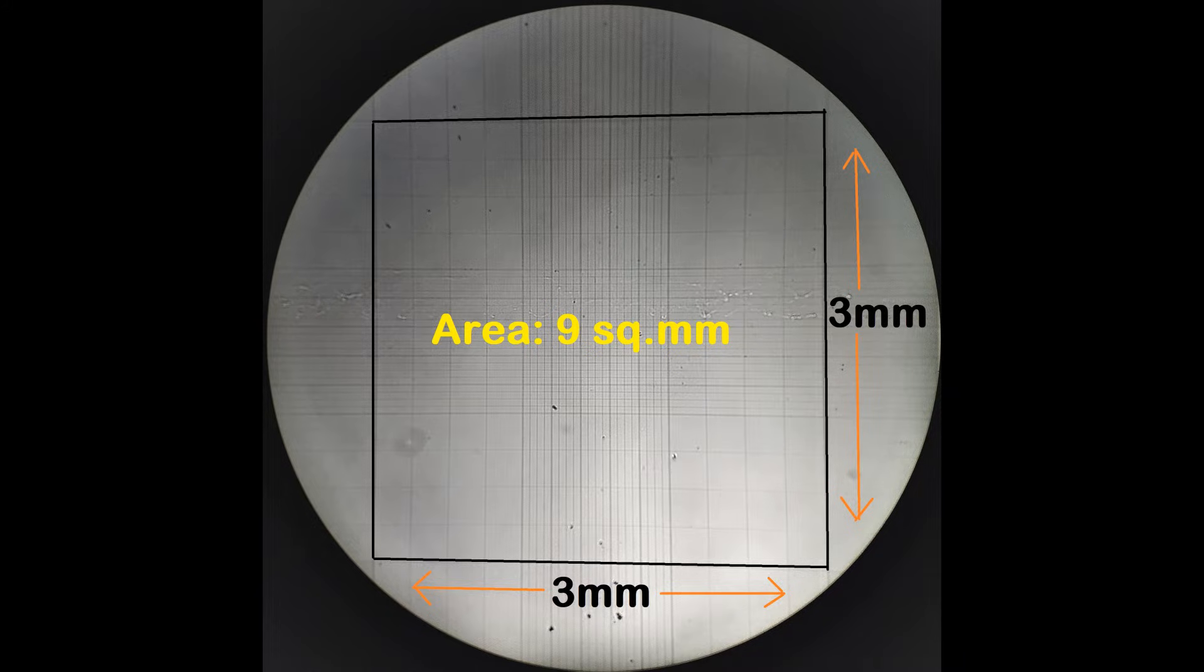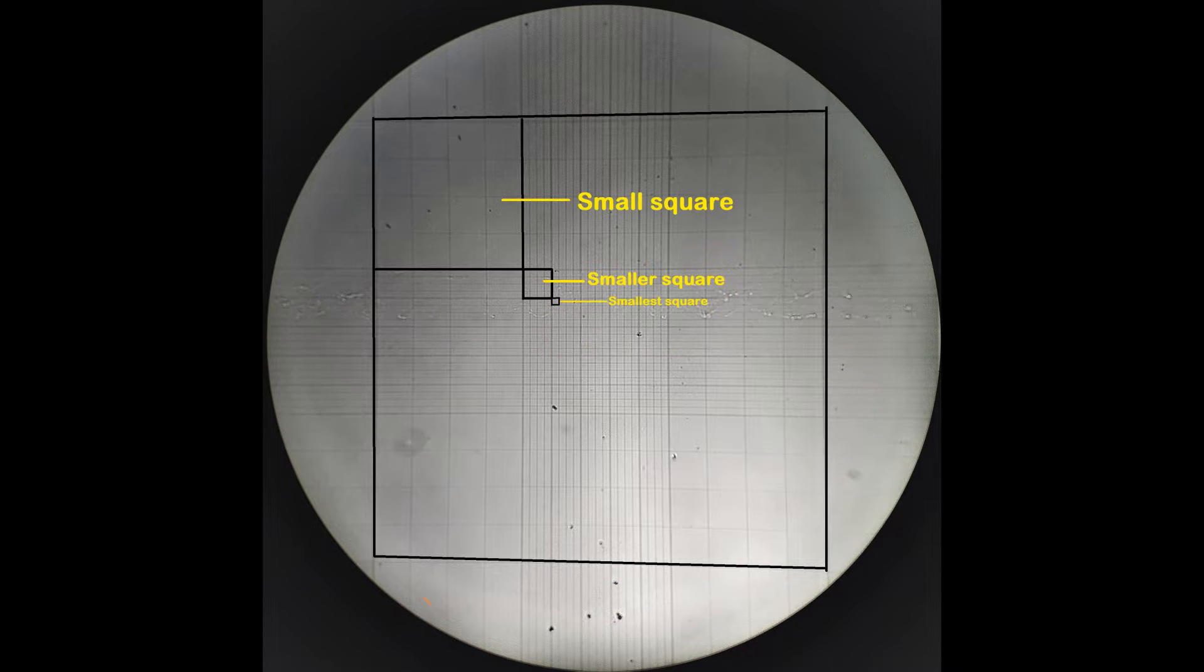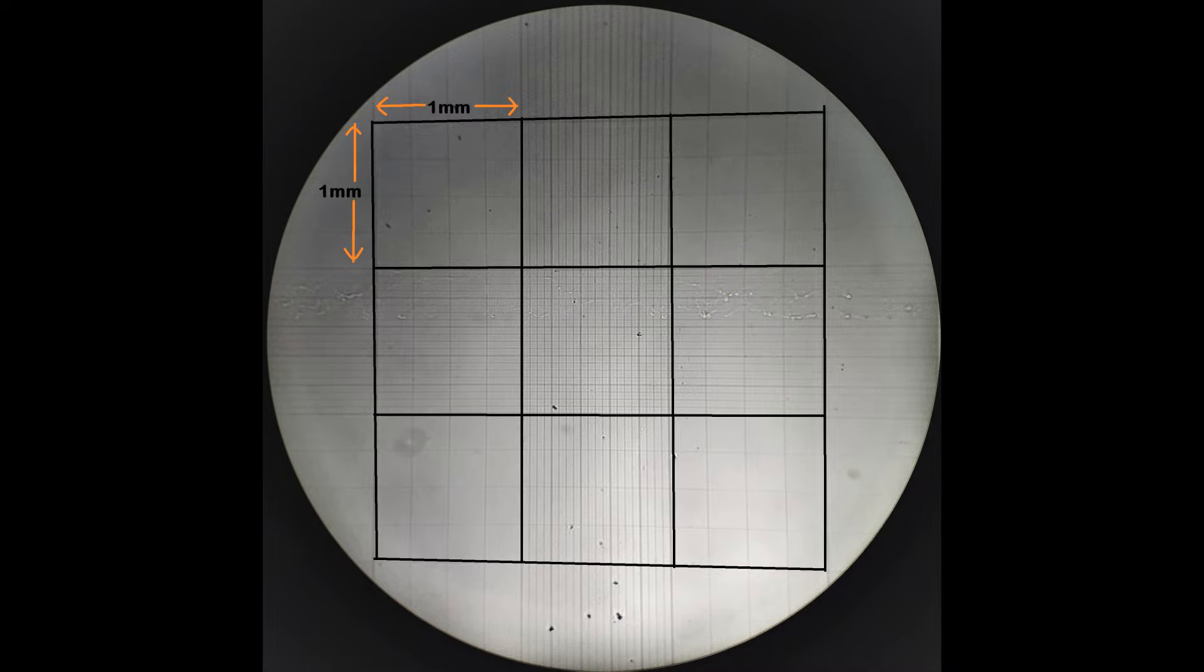Within this counting grid can be found squares of three different sizes, simply referred to as small square, smaller square, and smallest square. The counting grid consists of 9 small squares, each with a dimension of 1 by 1 mm.